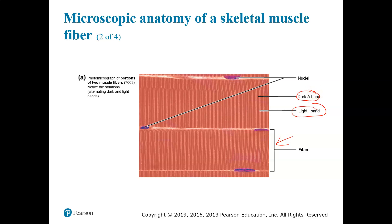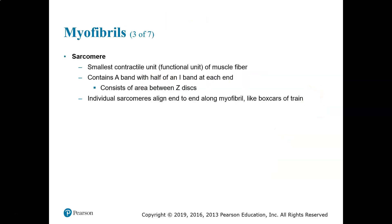A sarcomere is the smallest contracting unit of a muscle fiber, so each muscle fiber has many sarcomeres. One sarcomere contains an A band and half of an I band at each end, and it is the area between Z discs or Z lines — from Z line to Z line is one sarcomere. Individual sarcomeres align end to end along the myofibril like boxcars of a train.